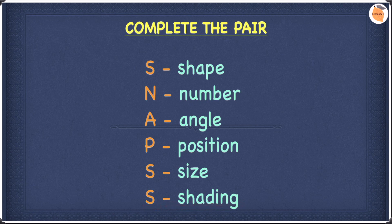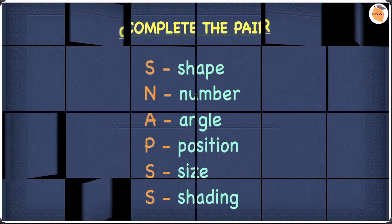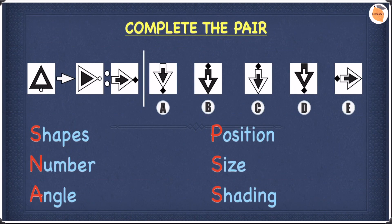Since we now know what SNAPS is, let's move on to our first question. Looking at this example, we're going to use SNAPS to help us. First, we're going to look at shapes. In terms of shapes, the shapes stay the same, so we can cross off shapes. Moving on to number — the number of shapes stays the same as well, so we cross that off too.